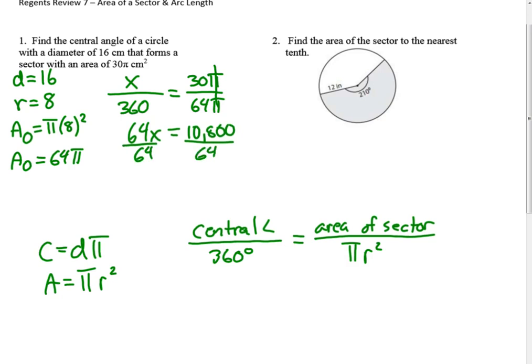And we get 675 divided by 4. Let me just get that as a decimal. So this is 168.75 degrees. That would be our central angle that forms that area.